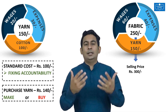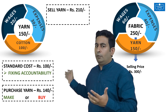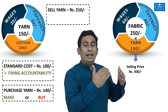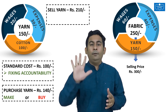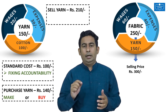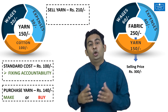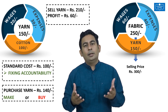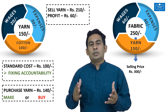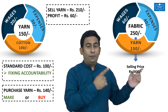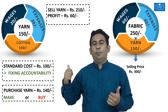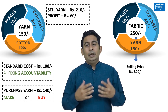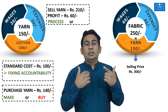Going to the third advantage, here is another scenario. The yarn is manufactured for 150 rupees and the management has two choices. They can process the yarn further by spending another 100 rupees, convert it into cloth, and sell it for 300 rupees, making a profit of 50 rupees. Alternatively, they can sell the yarn in the open market for 210 rupees and make a profit of 60 rupees per unit. They will choose to sell the yarn for 210 rupees instead of processing it further, because here they make 60 rupees profit whereas there they make only 50 rupees. So the third advantage of process costing is it helps them in deciding whether to process further or to sell it as it is.